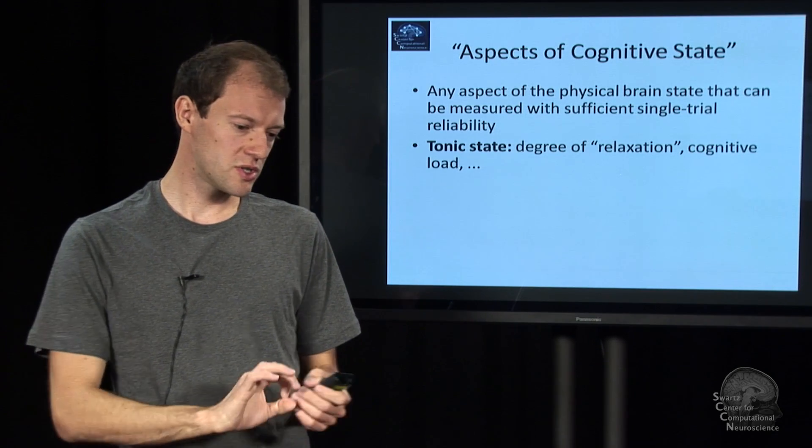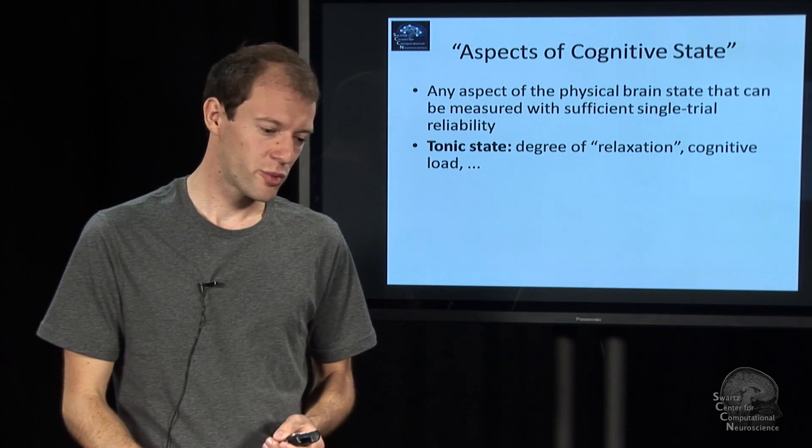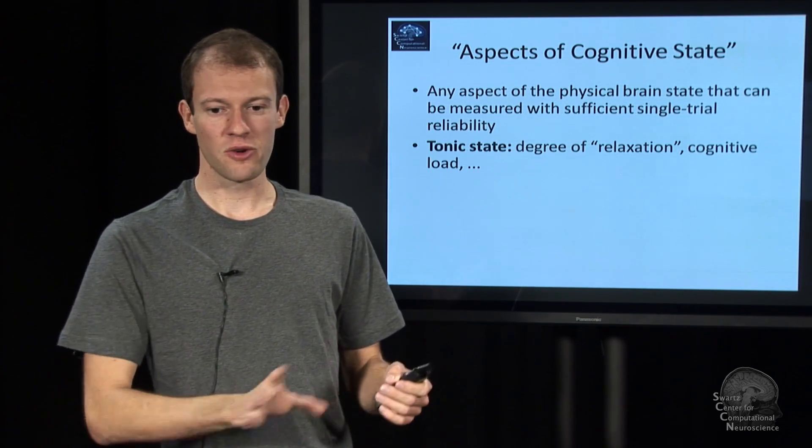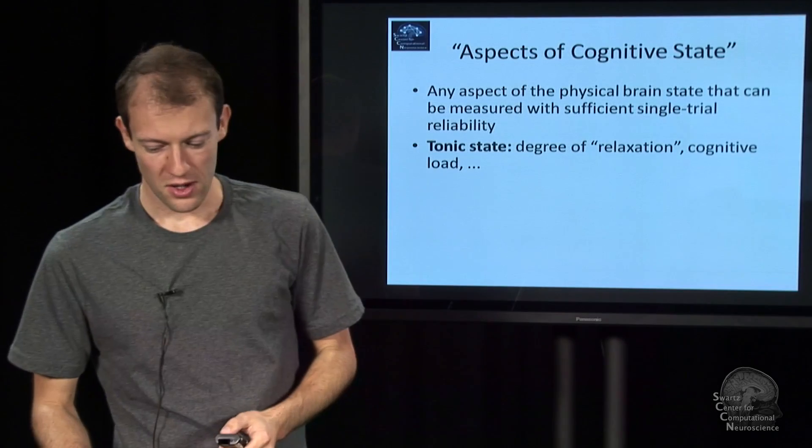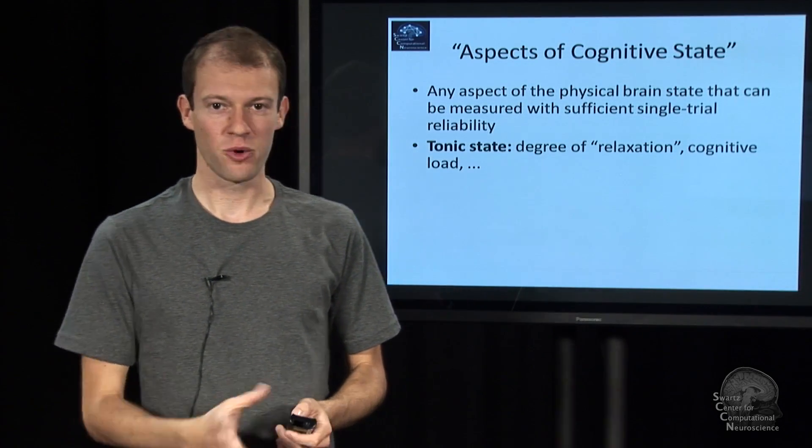The first one we call tonic state. So these are slow-changing brain processes, such as your degree of relaxation, or your stress level, and things like that, cognitive load. And all these things have been tackled in the literature. You can Google this up, although usually not with perfect accuracy.